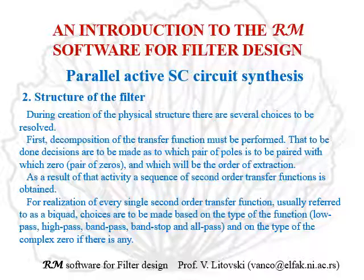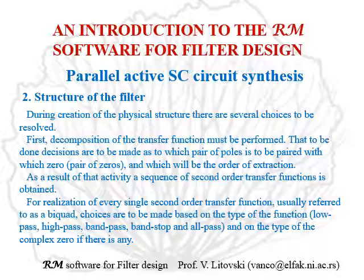During the creation of the physical structure, there are several choices to be resolved. First, the composition of the transfer function must be performed, and to do that, decisions are to be made as to which pair of poles is to be paired with which zero or pair of zeros, and which will be the order of extraction. As a result of that activity, a sequence of second-order transfer functions is obtained. For realization of every single second-order transfer function, choices are to be made based on the type of the function — low-pass, high-pass, band-pass, band-stop, all-pass — and on the type of the complex zero if there is any.